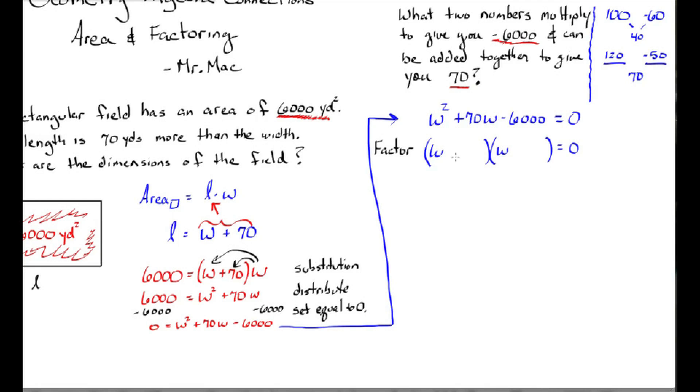What will work is 120 and negative 50, which will give us 70 and multiply to give us negative 6,000. So I'm going to use the multiplicative property of zero to find what makes the quantity zero.